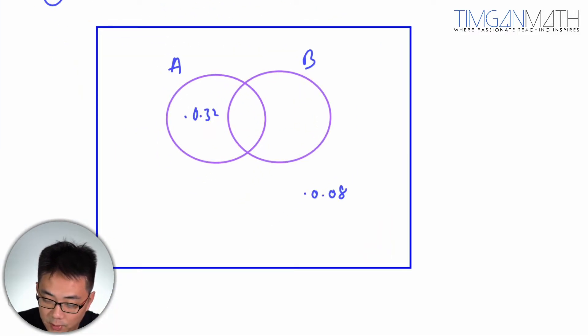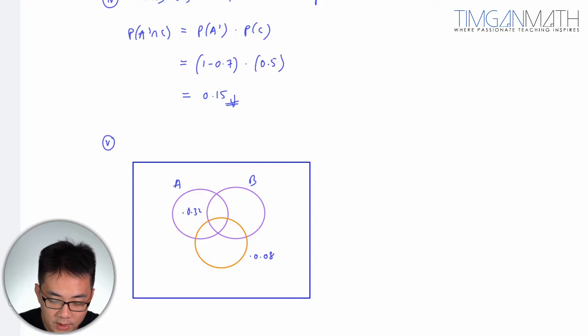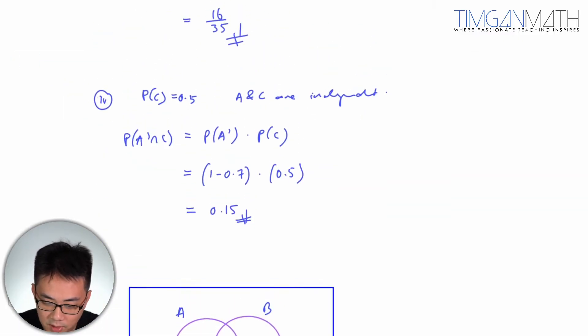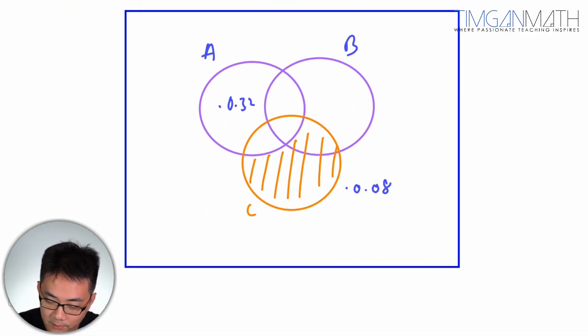Then after it, C comes into play. Now C is actually independent. So A prime intersect C, this crescent here, we are told that this crescent here is actually 0.15.